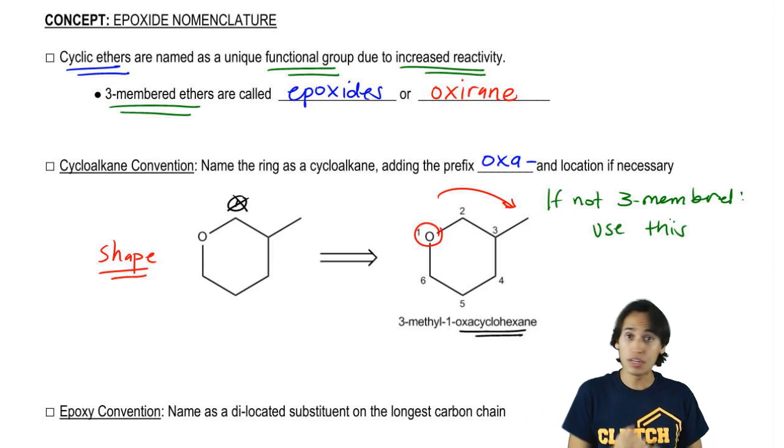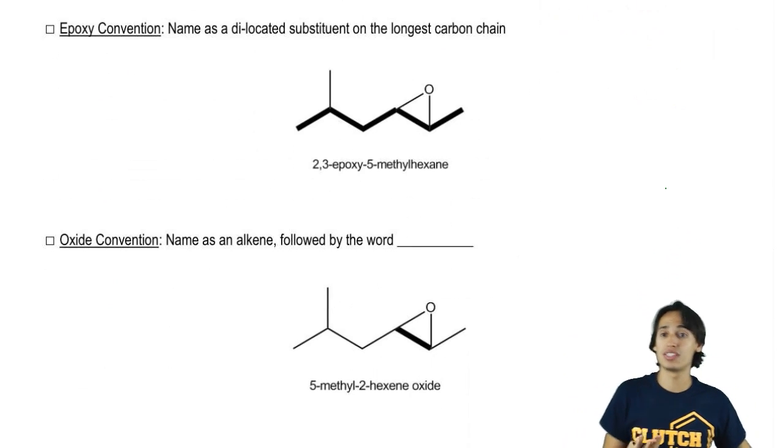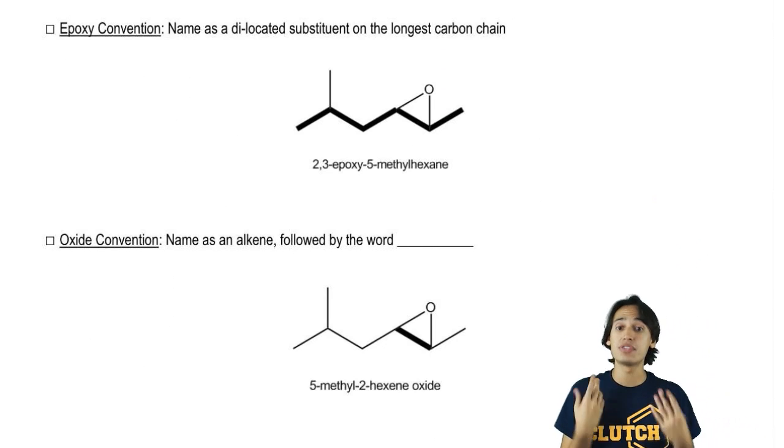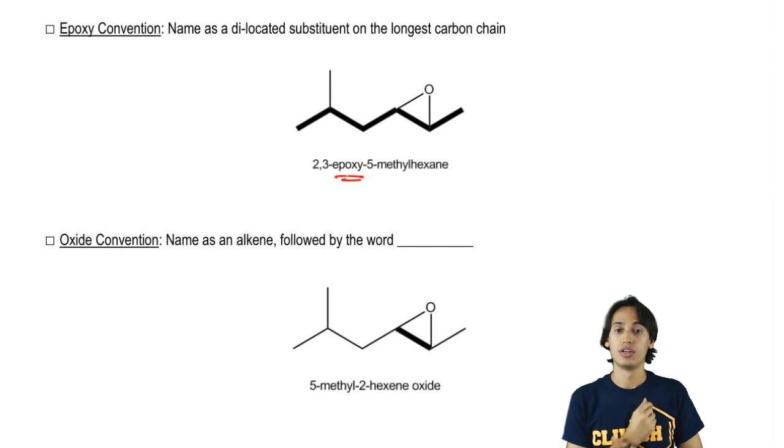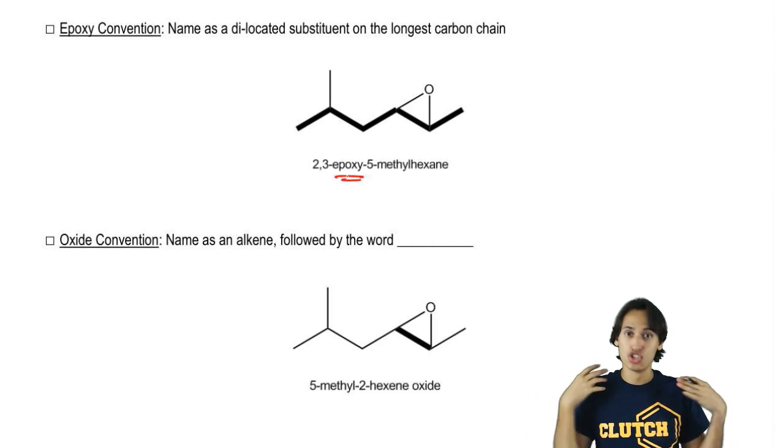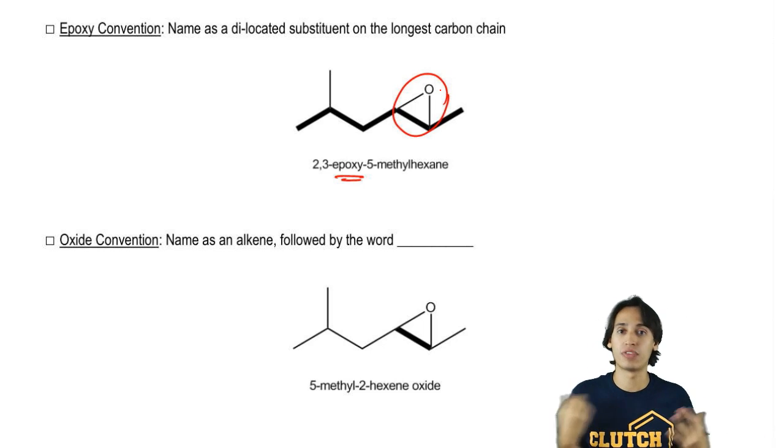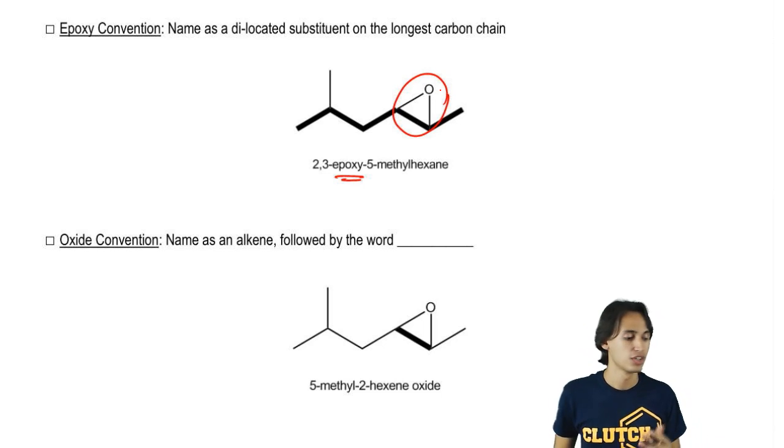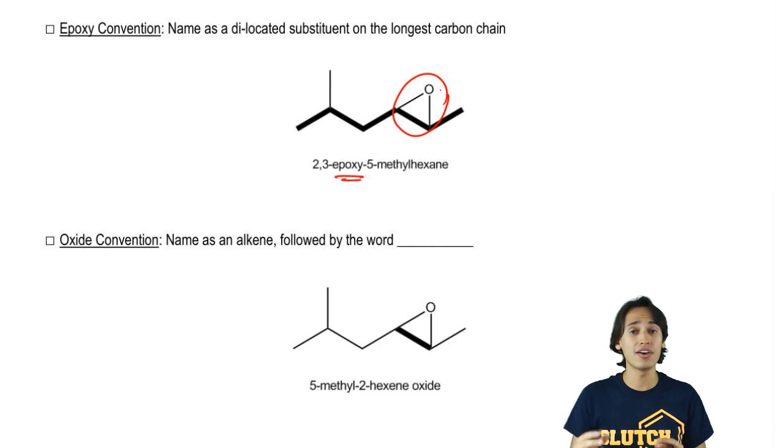Now if it is a three-membered ring, we could still use it, but this is not going to be the most common way to name it. If we are dealing with a three-membered ring, there's much more common ways. One is the epoxy convention. So what the epoxy convention basically says is this. We have a substituent named an epoxy group and we're just going to name our longest carbon chain as normal and then label the three-membered ring as just a substituent coming off of that chain. One other thing about this that's interesting is that you actually have to name the locations of both of the atoms that the three-membered ring is attached to.